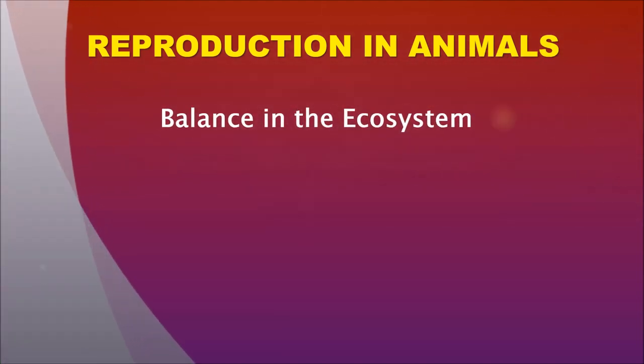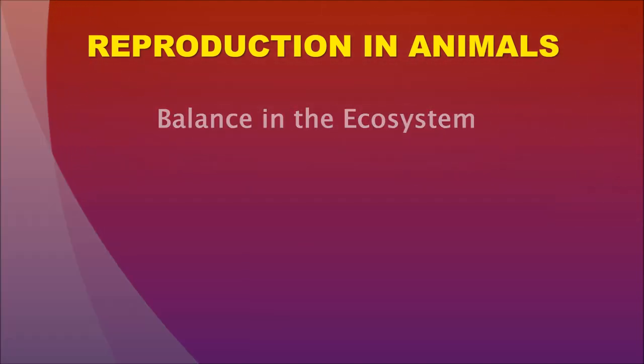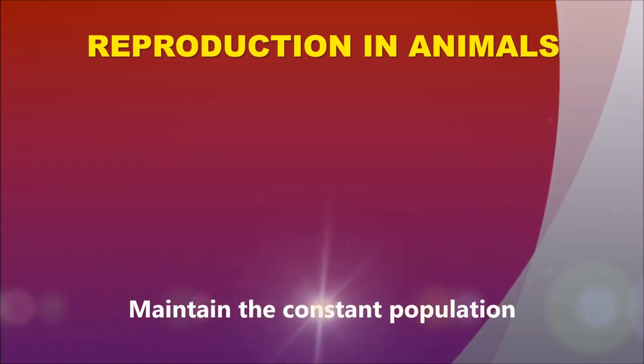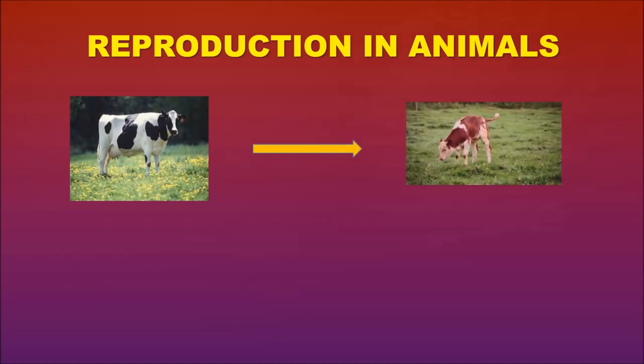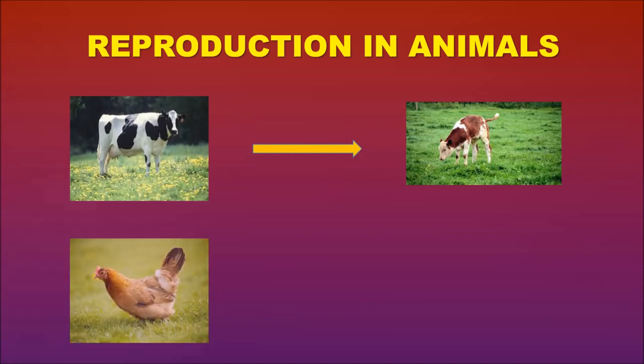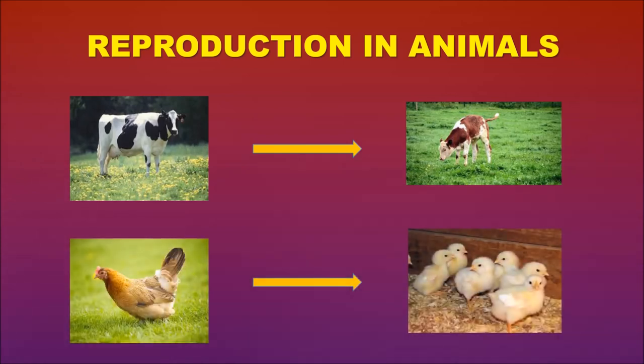Reproduction in animals. All the living organisms on this earth reproduce to give out their young ones, to maintain the balance in the ecosystem. The reproduction helps to maintain their population. For example, the cow gives rise to its young ones called a calf. In the same manner, the hen lays eggs and gives out chickens.